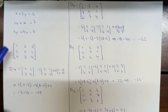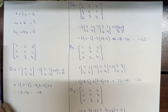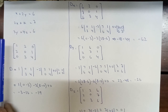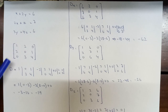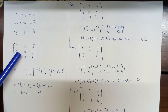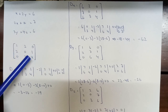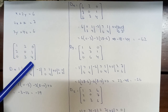First of all we have to determine its determinant. We hide the corresponding row and the corresponding column and write the remaining numbers. For example, for the element 1, the remaining will be 0, 1, 3, and 4.